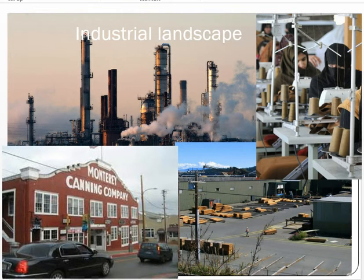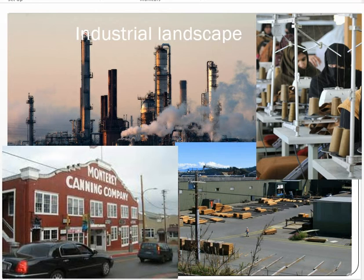Examples of the industrial landscape include canneries taking fish and adding value, textile plants taking cotton and turning it into thread or weaving it into garments, and steel and timber industries. These all illustrate how secondary industries transform raw materials into higher-value products.